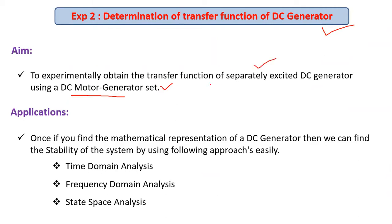We are taking a motor-generator set. Why? The experiment is on the generator, but we need a mechanical input, which is not readily available. So we are using a motor. The motor converts electrical energy into mechanical energy, and that mechanical energy is given as input to the generator.